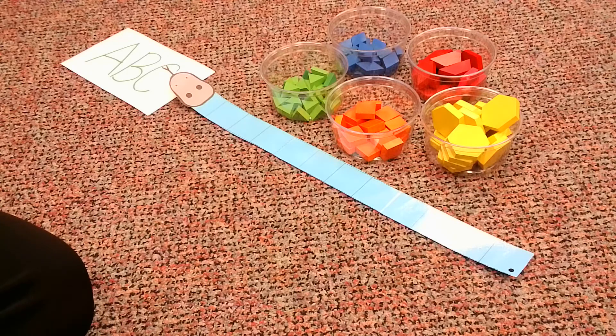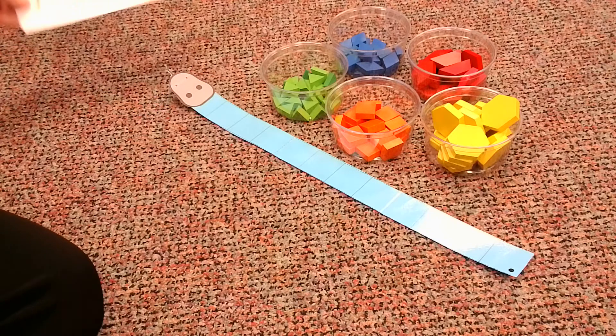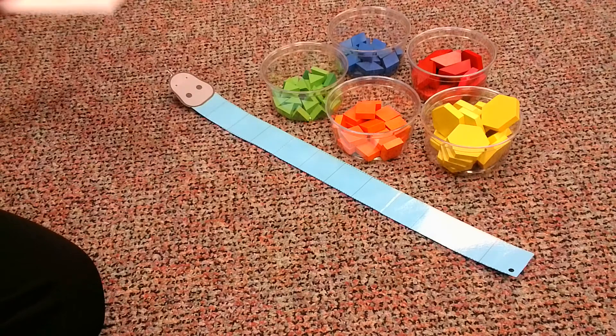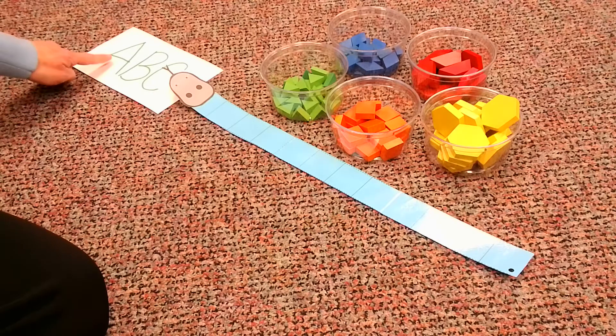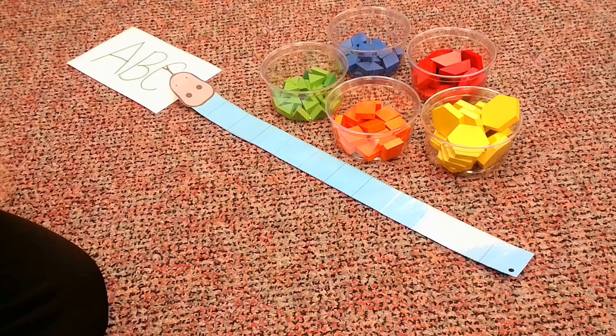Okay boys and girls we are back. Our last pattern for today is A, B, C. So you know when we have an A, B, C pattern I see one, two, three different letters. So that means I'm going to need three shape types.